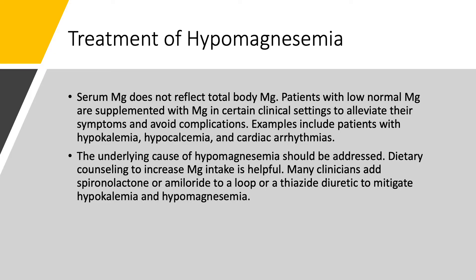Let's talk about treatment of low magnesium. As we said before, serum magnesium does not reflect total body magnesium because only 1% of total body magnesium is in the extracellular fluid. So, patients with low-normal magnesium are frequently given magnesium, especially if they have hypokalemia, hypocalcemia, or cardiac arrhythmias — even if magnesium is as low-normal as 1.6 or 1.7. This will prevent complications.